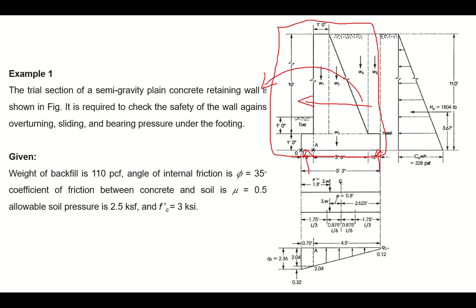The geometry of the wall: the height of the vertical element is 10 feet, the thickness of the base pad is 1 foot, and the total length of the base is 5 feet 3 inches. The portion of the base beyond the wall is 9 inches, the width of the next portion is 3 feet 6 inches, and the remaining part is 12 inches. The outer edge of the wall is straight and the inner edge is inclined. The width of the wall at the top is 1 foot and at the bottom is 3 feet 6 inches.